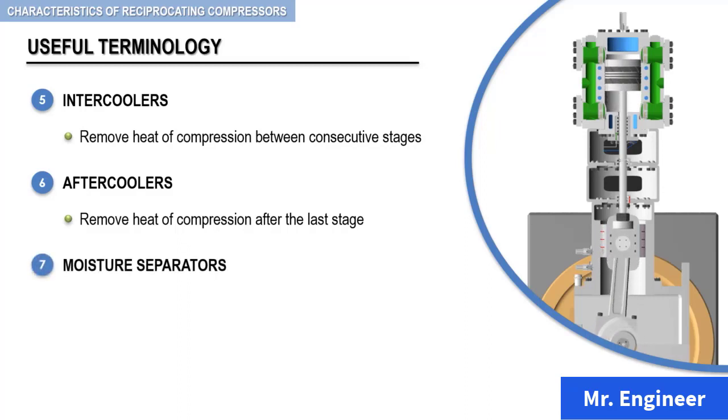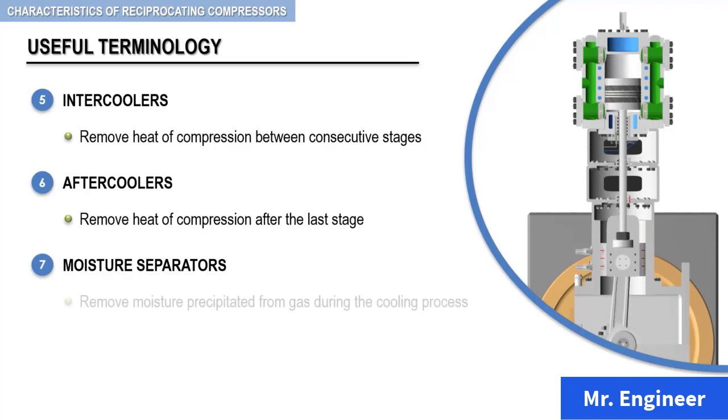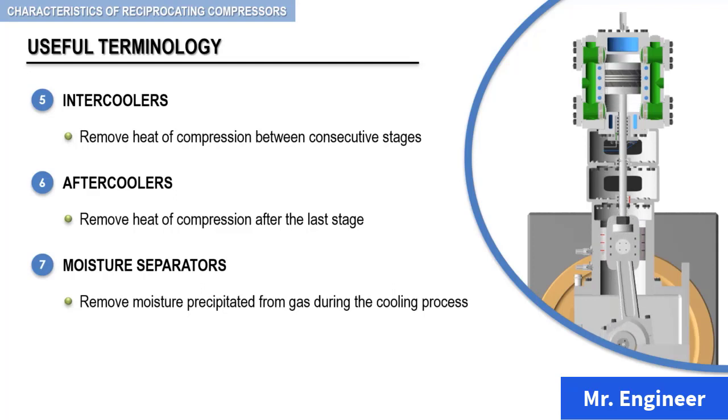Moisture separators are devices for removing moisture precipitated from gas during the cooling process, allowing the condensate to collect and then drain via either a manual or an automatic condensate trap.